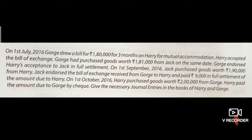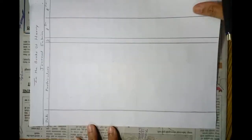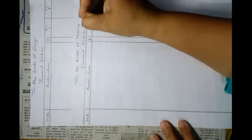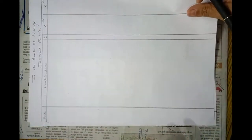This is a little bit complicated problem. There are three parties: George, Harry, and Jack. Transactions are given between them, and we need to pass journal entries in the books of Harry and George. So let's solve this problem now. We have to pass journal entries in the books of Harry and George — this is the journal of Harry and this is the journal of George.